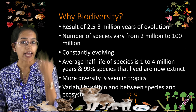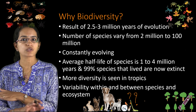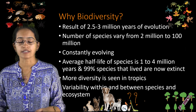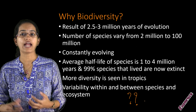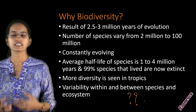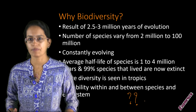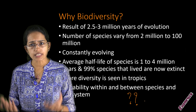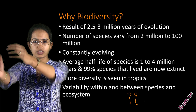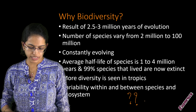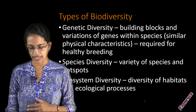99% of the species that existed are no more — they are totally extinct. There has been constant variability and dynamics in species and ecosystems over the period of years. This diversity in the ecosystem can be understood with various approaches, and there are three types of diversities that we talk about.